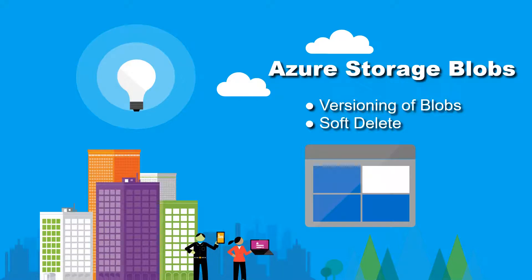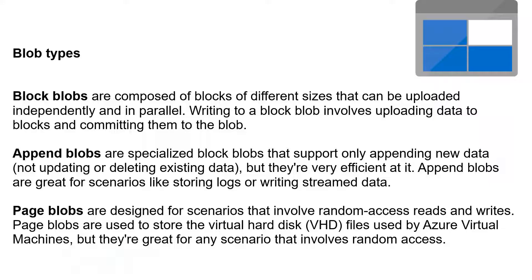Hello everyone. In this video we are going to see about Azure Storage Blob. I hope you already saw my video on Azure Storage — if not, I request you to watch it. In that storage account creation we selected versioning and soft delete, so in this video we are going to see those in detail. There are three types of blob: block blob, append blob, and page blob. Append blob is for appending data, so you can write streaming data over it. Page blob is for randomly accessed files. Block blob is for uploading files independently and in parallel. In this video we are going to see about block blob only.